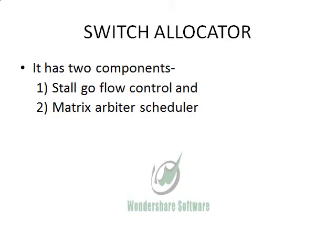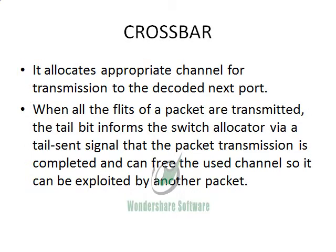The switch allocator has two components: STALLO flow control and Matrix Arbiter scheduler. The STALLO flow control decides whether the buffer is full or not, whereas the Matrix Arbiter scheduler decides the priority level of the request received. The crossbar circuit allocates the appropriate channel for transmission to the decoded next port. When all the flits of a packet are transmitted, the tail bit informs the switch allocator via a tail-send signal that the packet transmission is completed and the used channel can be freed for exploitation by another packet.